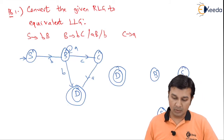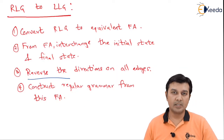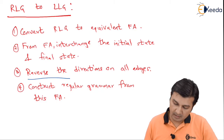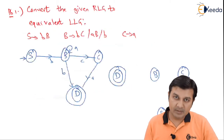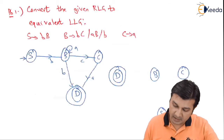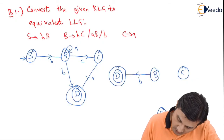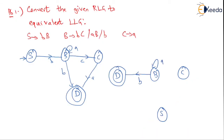Now once that is done, there is one more step: reverse the direction on all the edges. I am sketching the diagram side by side so that we can have a correlation. Reversing: D to B on 'b'; reversing gives me the same for C on 'a'; this is C on 'a'; and here it gives me B on 'b'. That completes the reversing.